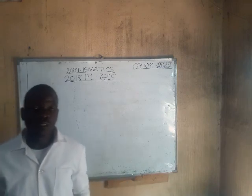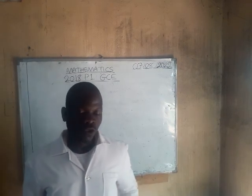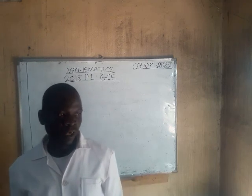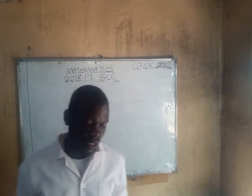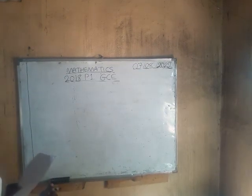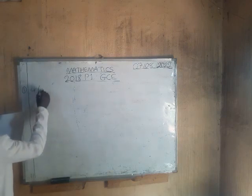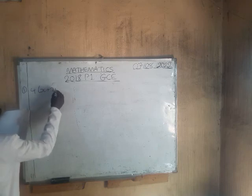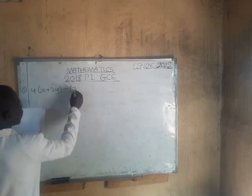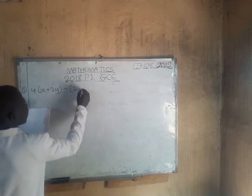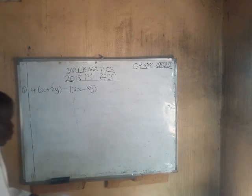Good afternoon. I'm going to revise with you the 2018 GCE Paper 1 Mathematics. The first question asks us to simplify: 4(x + 2y) minus (3x - 8y).